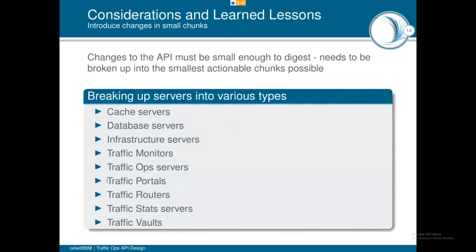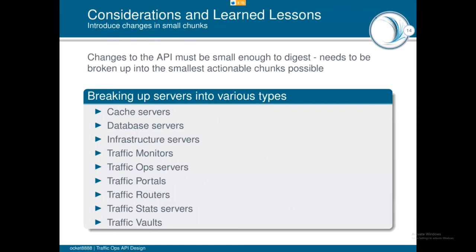And the other example is delivery services, which I've talked about a lot. So delivery services have lots of properties. These are just two things that were looked at. This top one was actually approved. And this bottom one is pending. But the point is that they were done separately, instead of submitting a giant blueprint to change everything about a delivery service all at once.